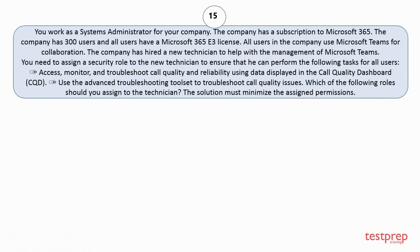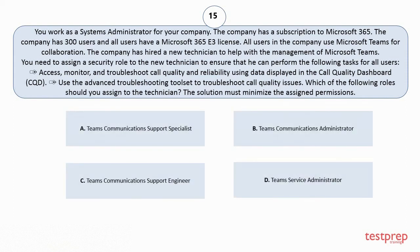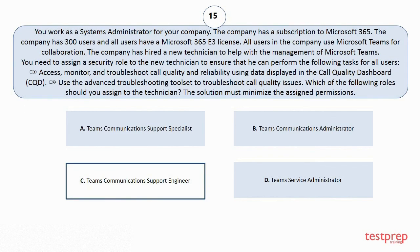Question 15. You work as a systems administrator for your company. The company has a subscription to Microsoft 365. The company has 300 users and all users have a Microsoft 365 v3 license. All users in the company use Microsoft Teams for collaboration. The company has hired a new technician to help with the management of Microsoft Teams. You need to assign a security role to the new technician to ensure that he can perform the following tasks for all users: 1. Access, monitor, and troubleshoot call quality and reliability using data displayed in the Call Quality Dashboard. 2. Use the Advanced Troubleshooting Toolset to troubleshoot call quality issues. Which of the following roles should you assign to the technician? The solution must minimize the assigned permissions. Your options are: A. Teams Communications Support Specialist. B. Teams Communications Administrator. C. Teams Communications Support Engineer. D. Teams Service Administrator. The correct answer is Option C.